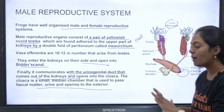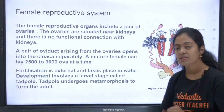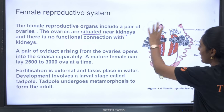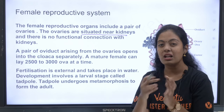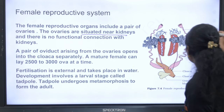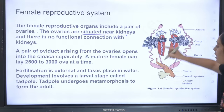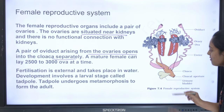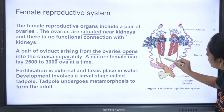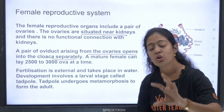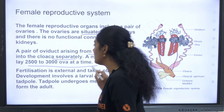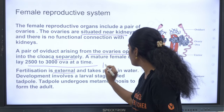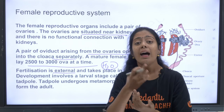Bidder's canal communicates with the urinogenital duct, which comes out of the kidney and opens into the cloaca. The cloacal aperture is a common opening for faecal matter, urine, and sperms to the exterior. The female reproductive system includes a pair of ovaries situated near the kidneys. A pair of oviducts arising from the ovaries opens into the cloaca separately. A mature female can lay around 2,500 to 3,000 ova at a time.